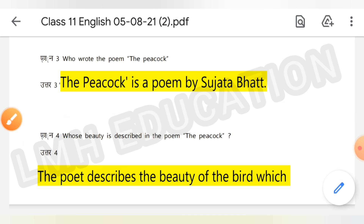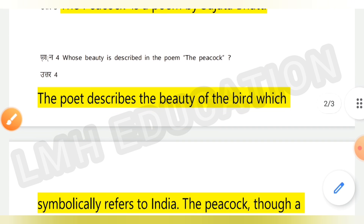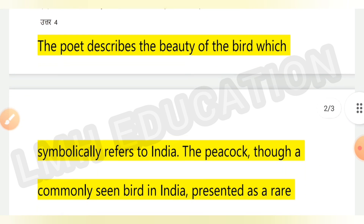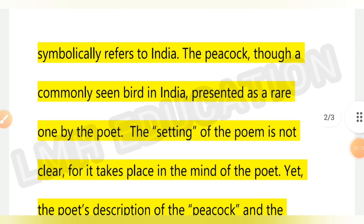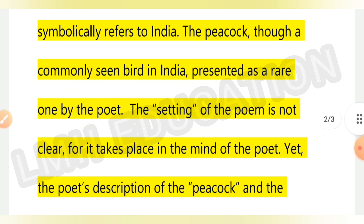Bhat. Fourth question: whose beauty is described in the poem 'The Peacock'? The answer is — the poet describes the beauty of the bird which symbolically refers to India. The peacock, though a commonly seen bird in India, is presented as a rare one by the poet.